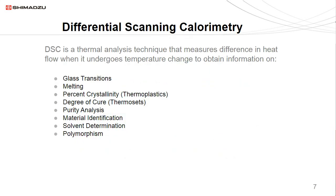Now we'll be discussing the instrumentation. One instrument is the differential scanning calorimeter, or DSC — a thermal analysis technique used to measure the difference in heat flow when a sample undergoes temperature change. From DSC we can obtain information on glass transitions, melting, percent crystallinity of thermoplastics, degree of cure of thermosets, purity analysis, material identification, solvent determination, and polymorphism.